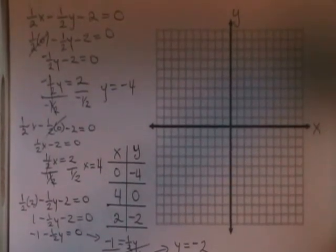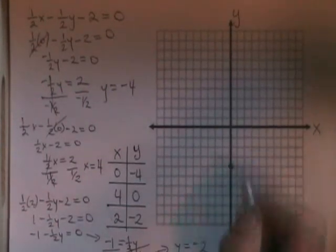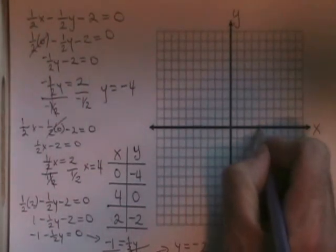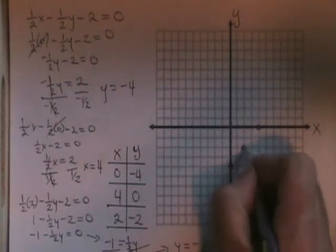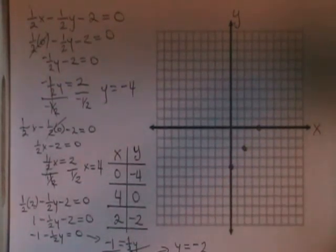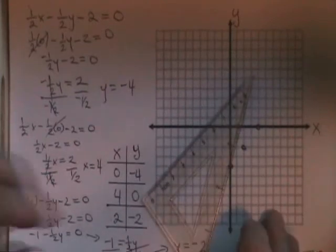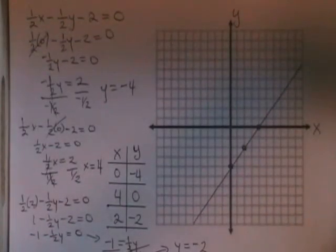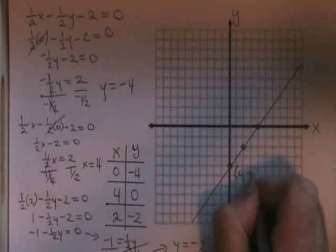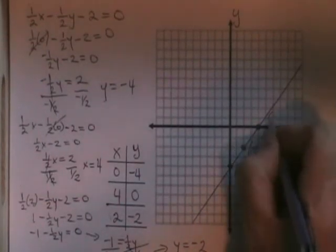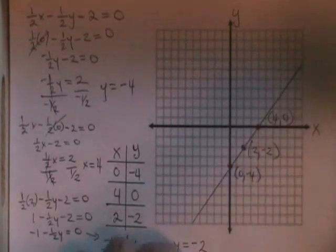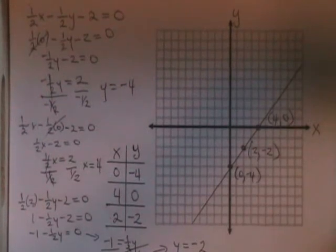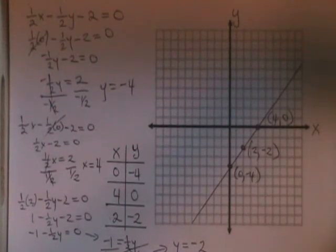Graphing the points that are in my table: zero, negative four is here. Four, zero is here. And two, negative two is here. These three points do indeed form a straight line. So now I will draw a line all the way through the graph that goes through those points, and I'll label them. This is another example of using the zero-zero trick to graph a straight line when the equation has both x and y in it.